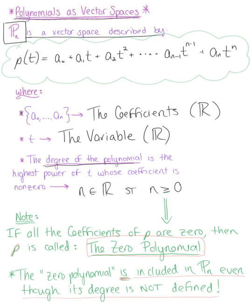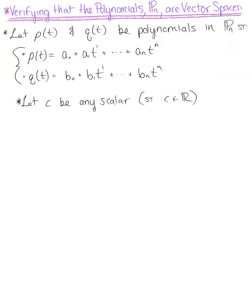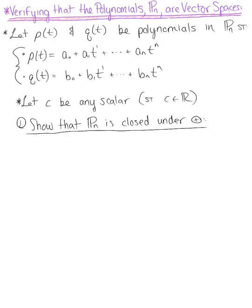So let's look at proving that this is, in fact, a vector space. We need to verify that the polynomials, double-bar P sub n, is indeed a vector space. We let p and q be polynomials in P sub n, and we let c be any scalar. We're restricting ourselves to real numbers. We already know the zero polynomial exists by definition, so there are two things to confirm. First, we need to show that P sub n is closed under addition — that is, for all polynomials p of t and q of t in P sub n, their sum is also in P sub n.